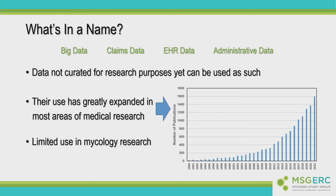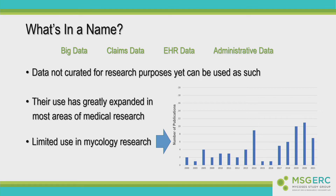The number of publications making reference to claims data since 1980 has exploded. If we overlay on this a number of such studies in fungal disease, you'll note the change in scale — it's on the order of about five or six per year. Compared to rheumatology or sepsis, where these claims data sources are used extensively, there hasn't been a lot of utilization of these sources in mycology research. There are probably a number of reasons for that — many of the data sources used in mycology talks today don't exist in these types of claims data sources, but that doesn't mean they're not useful.